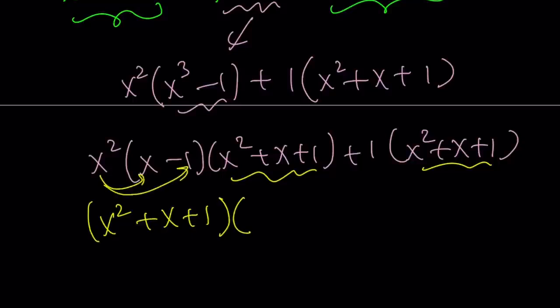If you go ahead and use the distributive property, just multiply, you're going to get x cubed minus x squared, and then from here, you're just going to get plus one.